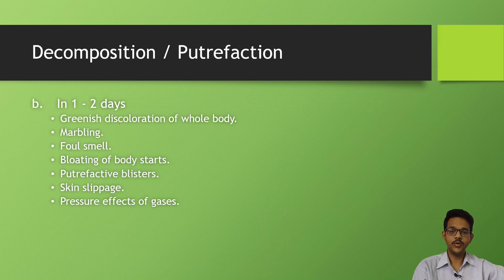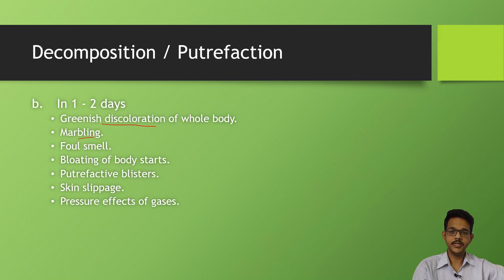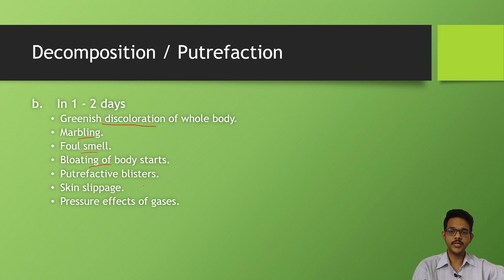In one to two days, putrefaction changes include discoloration of the whole body, marbling (that is the coloring of the veins), foul smell appears, bloating of body parts appears, blister formation occurs, skin starts slipping off, then pressure effects of the gases - that is bloating of the body - starts to appear.